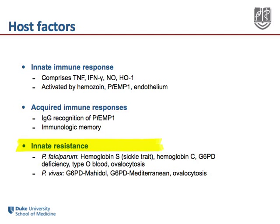Finally, there are a variety of human genetic variants which confer some degree of innate resistance to plasmodium falciparum. The most famous is sickle cell trait, because hemoglobin S in its heterozygous state can protect African children from over 90 percent of severe malaria cases. Other known red cell variants conferring resistance include hemoglobin C, G6PD deficiency, type O blood, and ovalocytosis. In recent years, emerging evidence suggests that some of these red cell variants also confer protection from plasmodium vivax, including two variants of G6PD as well as Southeast Asian ovalocytosis.